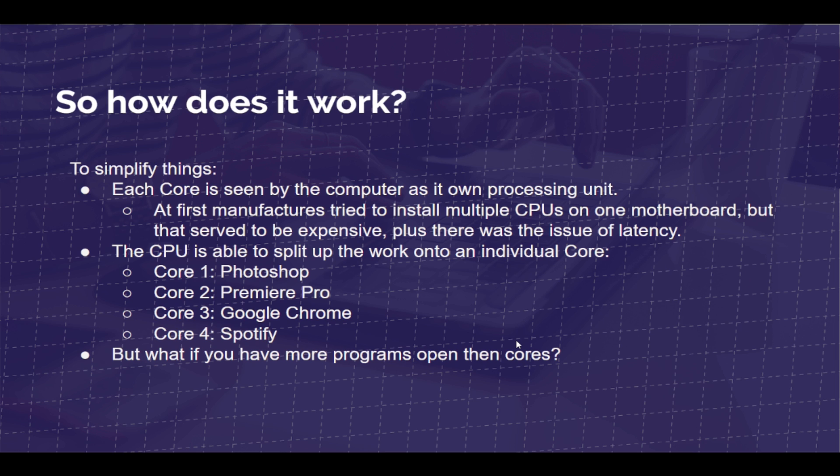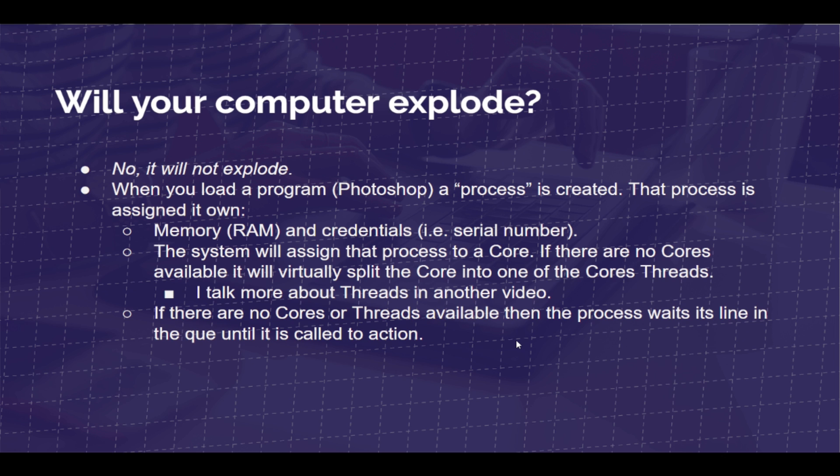But the question comes: what if you have more programs open than cores available? Will your computer explode? No, it will not explode. When you load a program, say Photoshop, a process is created. That process is assigned its own memory — RAM — and given an identifier number with a certain amount of RAM attributed to it. The system will assign that process to a specific core. If there are no cores available, it will virtually split the core into one of the core's threads.